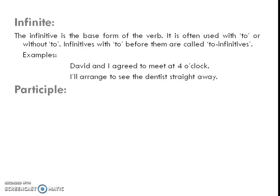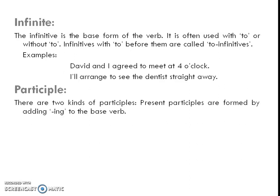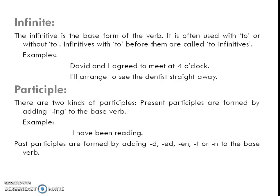Now, participles. There are two kinds of participles. Present participles are formed by adding -ing to the base verb — example: 'I have been reading.' Past participles are formed by adding -d, -ed, -en, -t, or -n to the base form — example: 'I have worked.' So we have added -ed to 'work' to form the past participle.